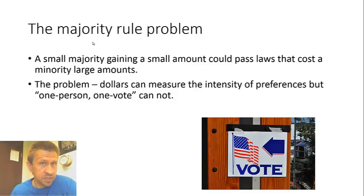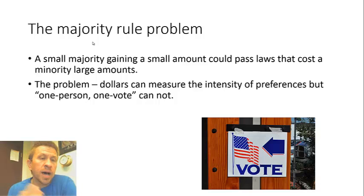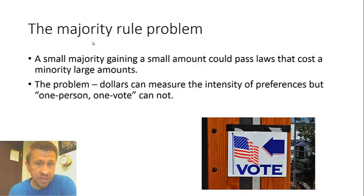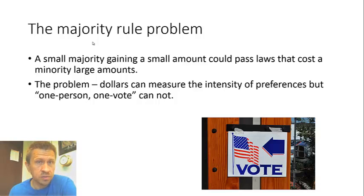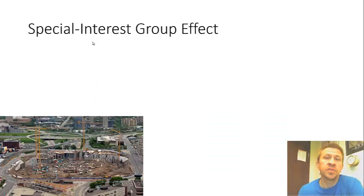You could actually have the opposite case too, where 60% don't want something and 40% do. The 40% would have gained a tremendous amount, while the 60% would have lost a little bit, but not much. The majority rule problem would pose significant issues in this case as well. The general idea is that when you have markets, dollars measure the intensity of preferences, so you end up with an efficient outcome. One person, one vote systems do not, and therefore can lead to a number of inefficient outcomes.